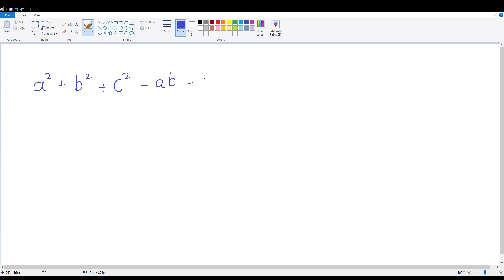Now this can be also written as 1/2(2a² + 2b² + 2c² - 2ab - 2bc - 2ca).